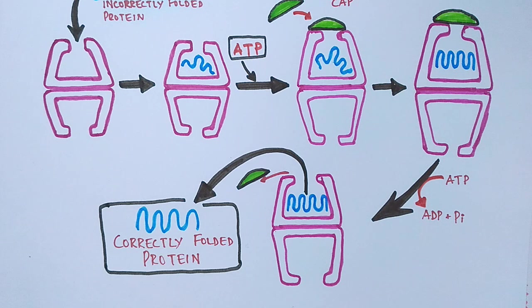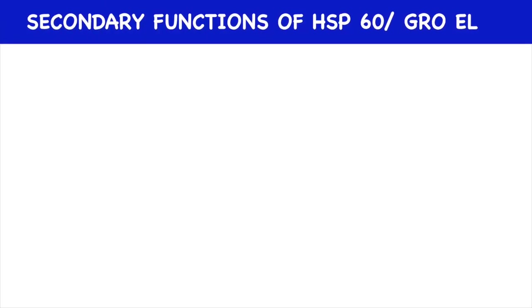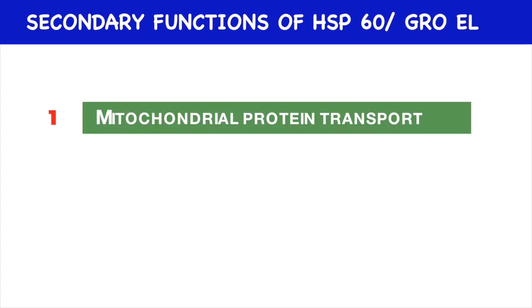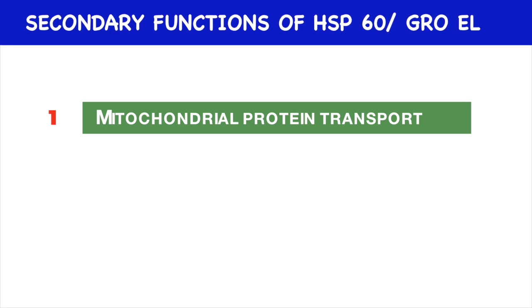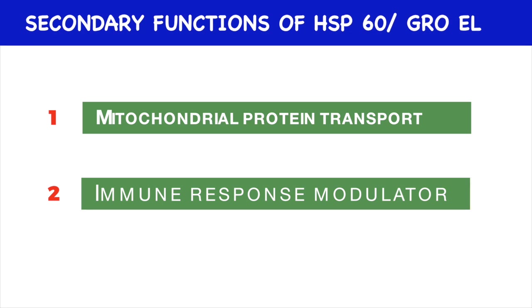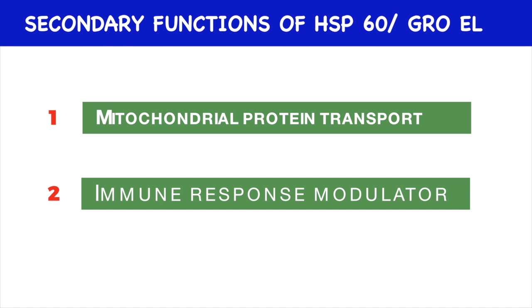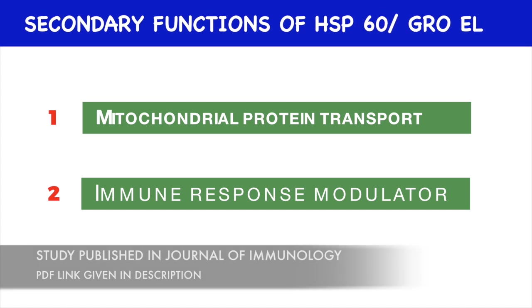But the HSP60 chaperone does not only play a role in protein folding, it has many other functions. The first one is mitochondrial protein transport. HSP60 possesses two main responsibilities: it functions to catalyze the folding of proteins destined for the matrix and also maintains protein in an unfolded state for transport across the inner membrane of mitochondria. Another important function of HSP60 chaperone is that it's an immune response modulator. Human HSP60 has ability to stimulate the immune cells of innate immune system to release cytokines, as it was experimentally shown that human HSP60 induces a pro-inflammatory response in mouse macrophages as well as in human monocytes.